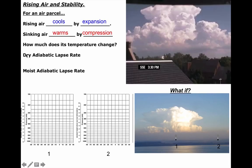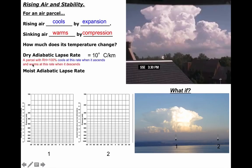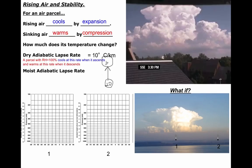The term is called the dry adiabatic lapse rate. 'Dry' means relative humidity is less than 100%; 'adiabatic' means the parcel is not mixing with its environment; and 'lapse rate' means temperature change. The dry adiabatic lapse rate is approximately 10 degrees Celsius per kilometer. So a parcel of air with relative humidity below 100% will cool at that rate as it ascends and warm at that rate as it descends.